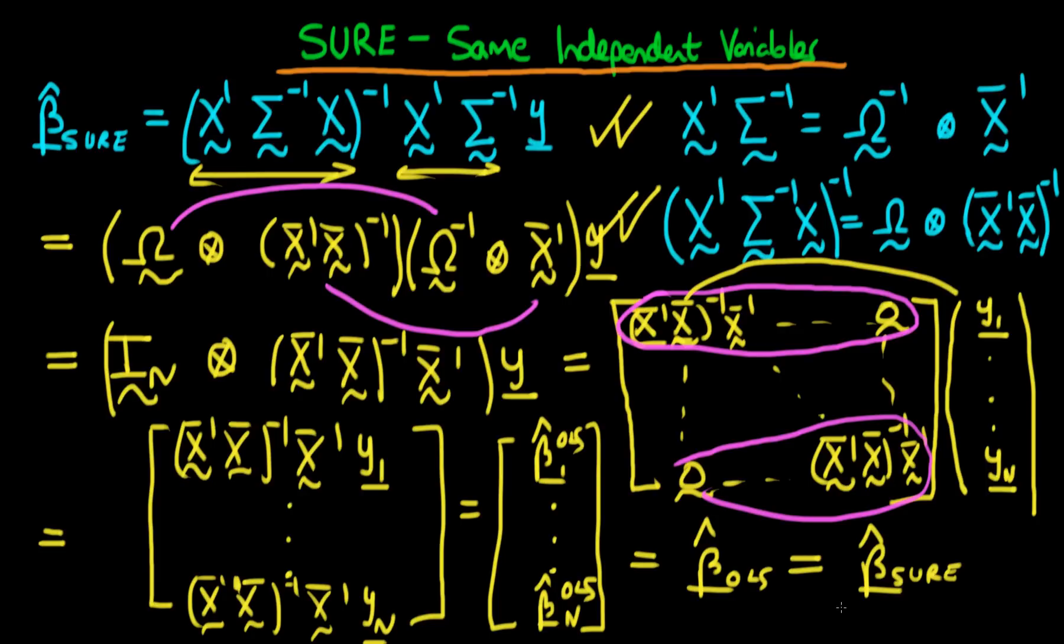So what we can see is that under the circumstance when we have the same independent variables for each individual in our system, beta hat OLS is exactly the same as the SURE estimator. So what does that tell us? Well that tells us that under these circumstances there's no need to do SURE estimation. You can just estimate each individual's equation separately and there's no problem with doing that. There's no penalty for doing that, unlike the circumstance when there are different independent variables. And there also has to be, I should also say, a degree of covariance in errors between the different individuals.